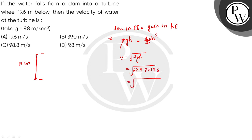Calculating: 2 into g (9.8) into h (19.6), we get the velocity as 19.6 meters per second. So the velocity of the water at the turbine is 19.6 meters per second, and option A would be the correct choice. I hope you can understand.